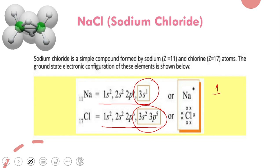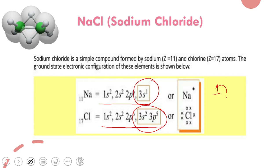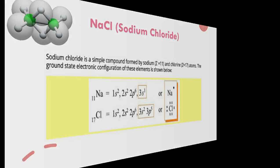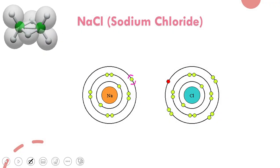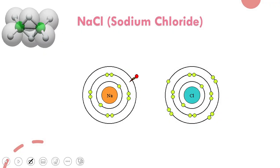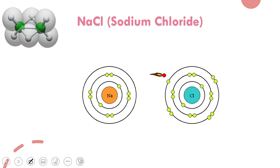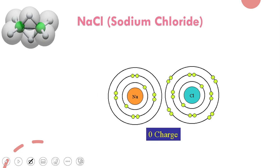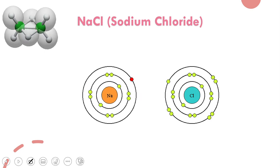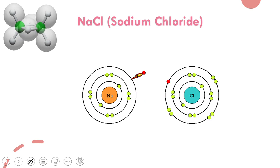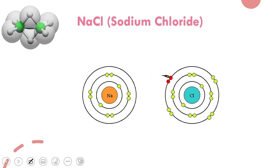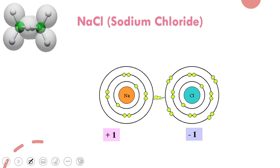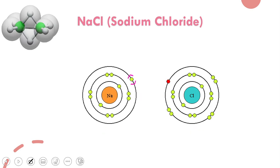Chlorine will accept that one electron and form a negative ion. Sodium transfers its one electron to chlorine. Because of that, the oppositely charged ions attract each other and form an ionic bond. You can clearly see how the electron is being transferred to chlorine. The positive and negative charges combine together and they become neutral and stable.